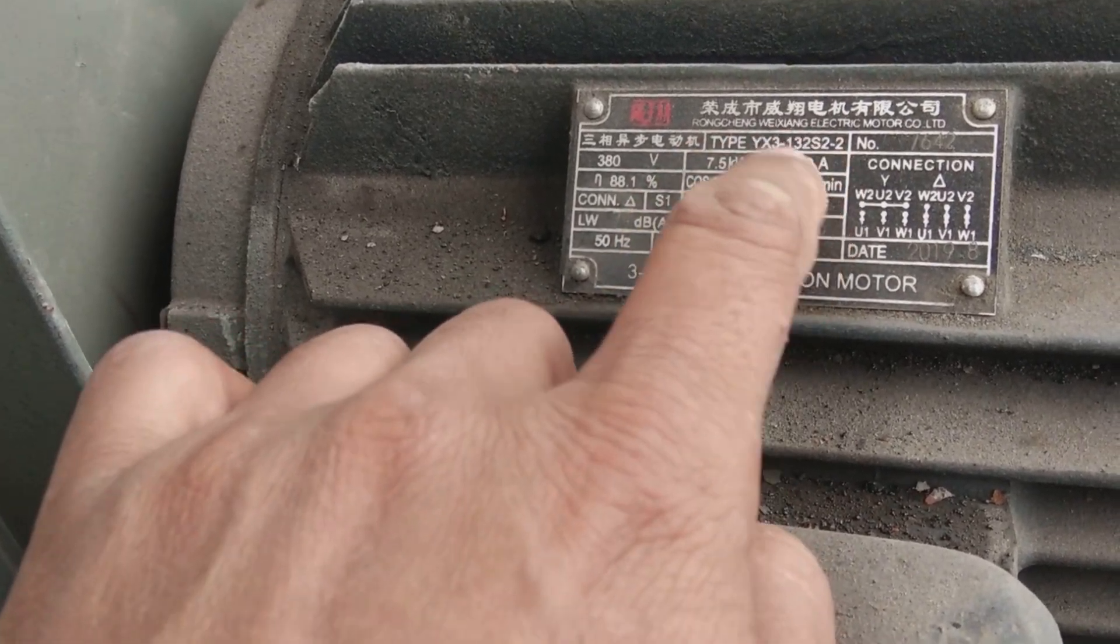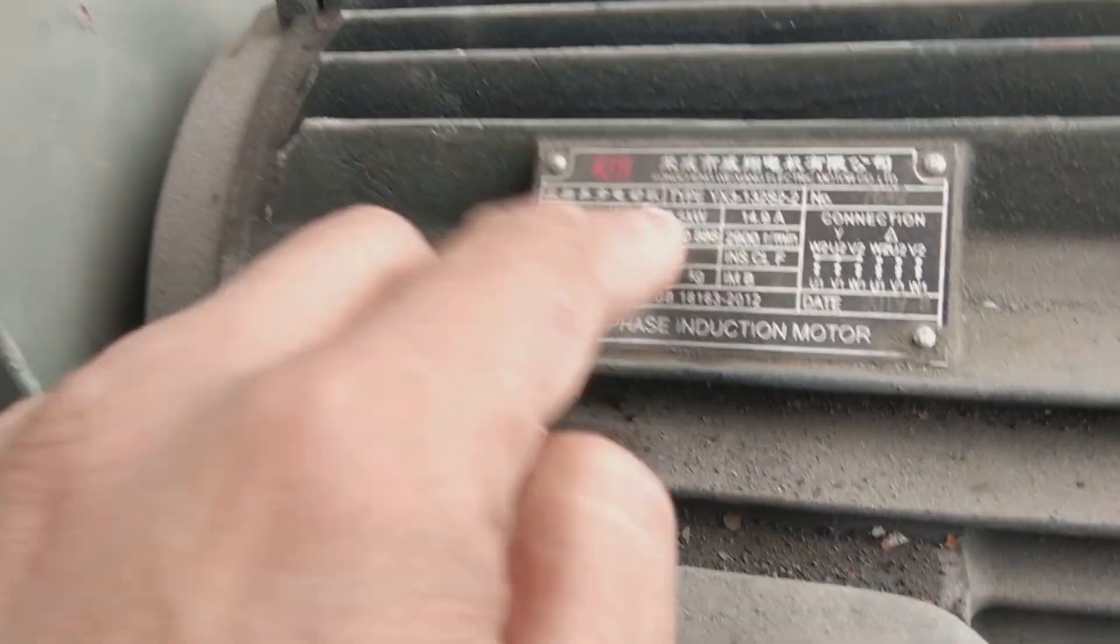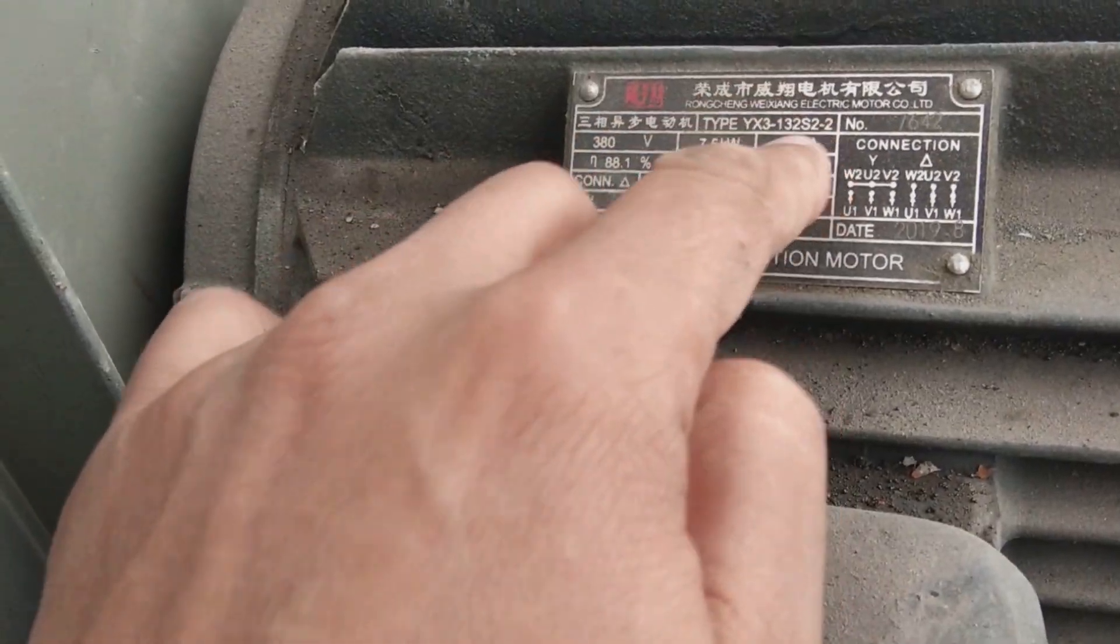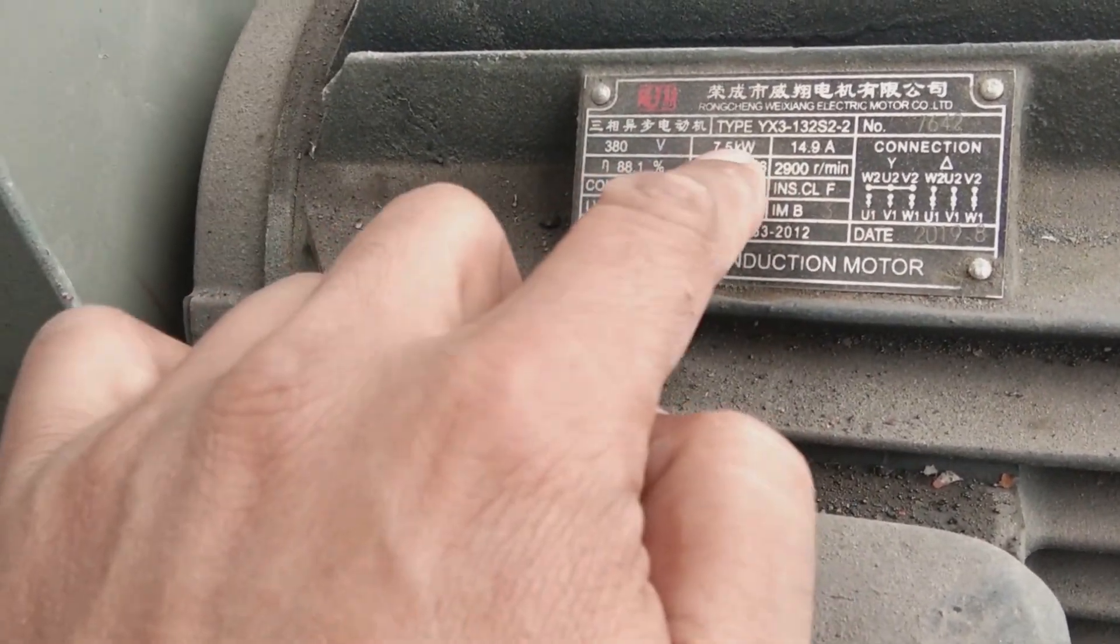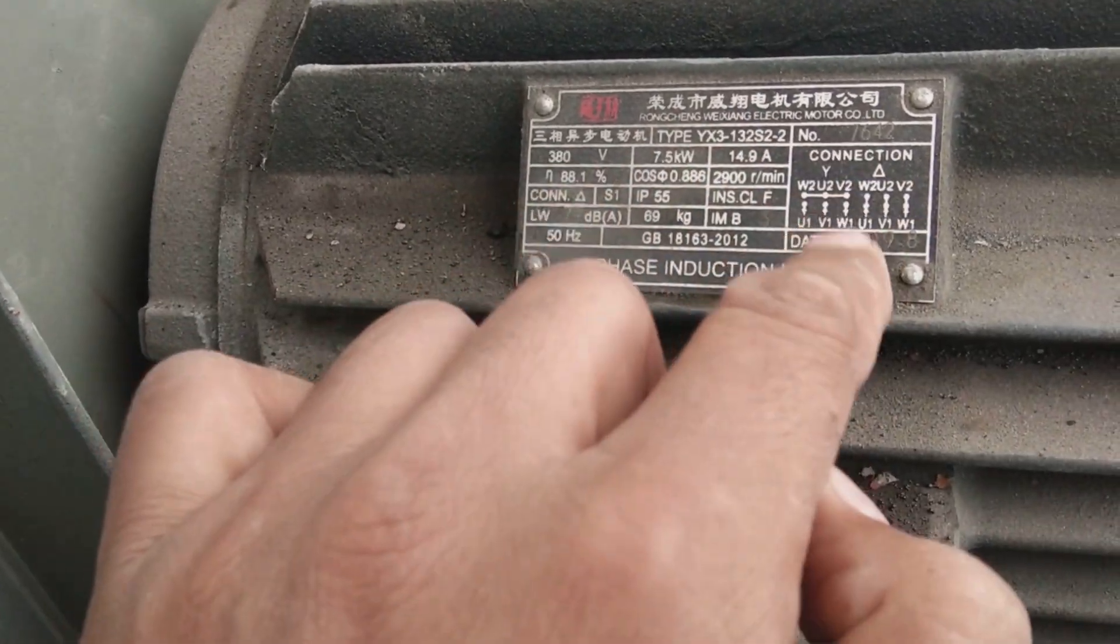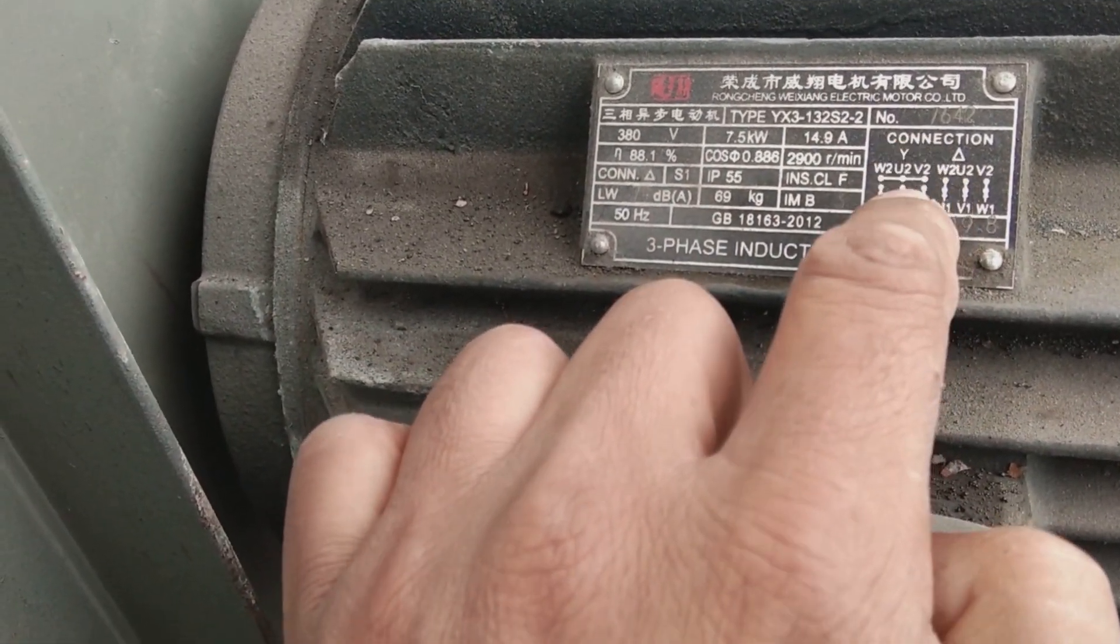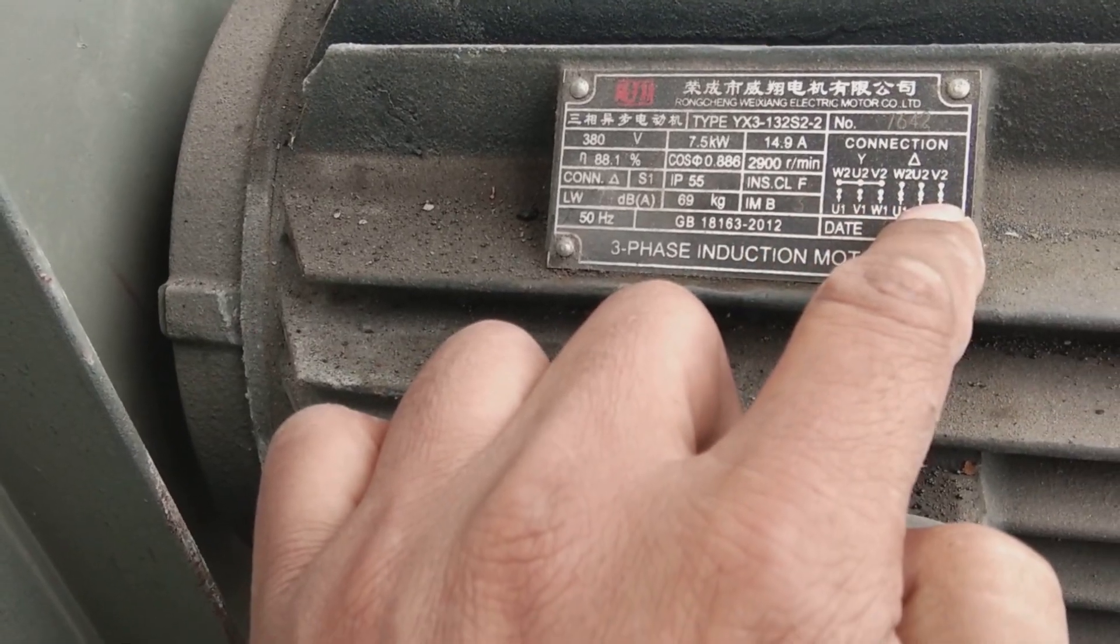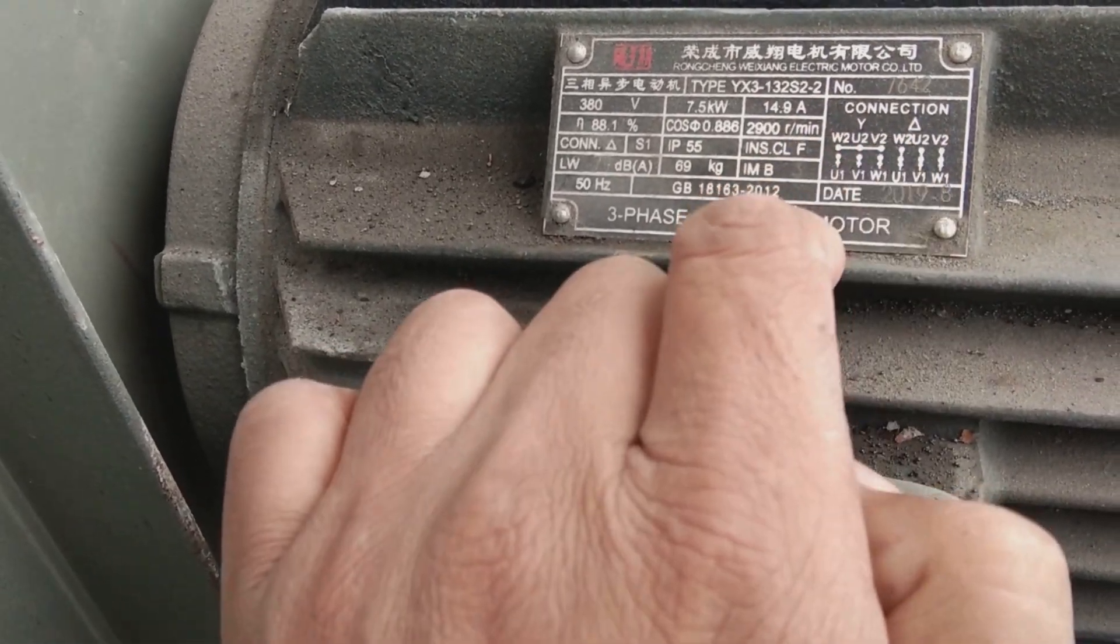There's a rule of thumb: if the frequency is 50 Hertz, the current will be simply double the kilowatts. So if the kilowatt is 7.5, around 15 ampere is expected, which is 14.9 in this case. Here you see diagrams - this is star and this is delta.